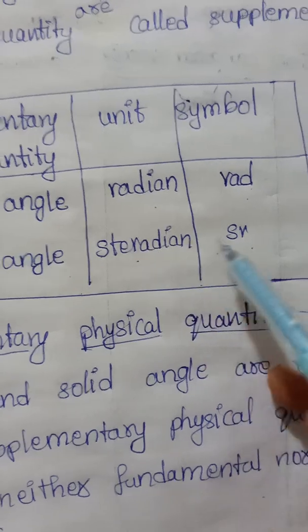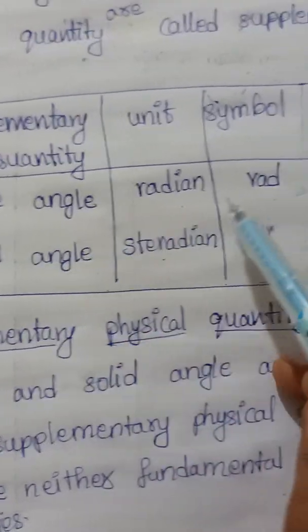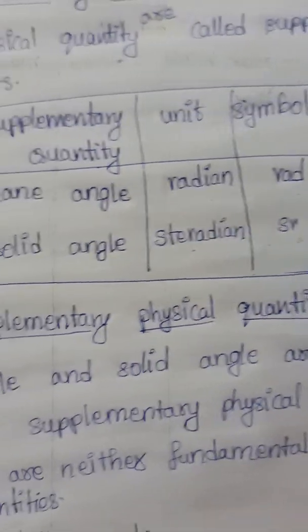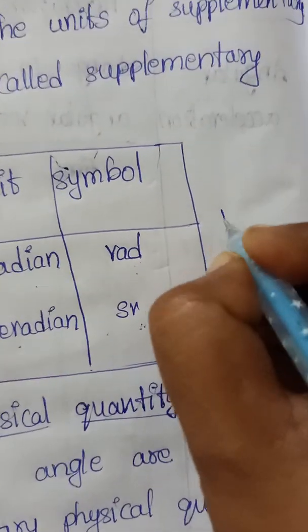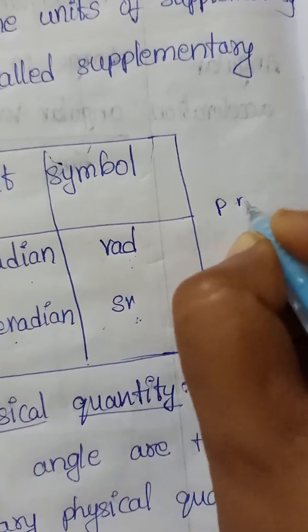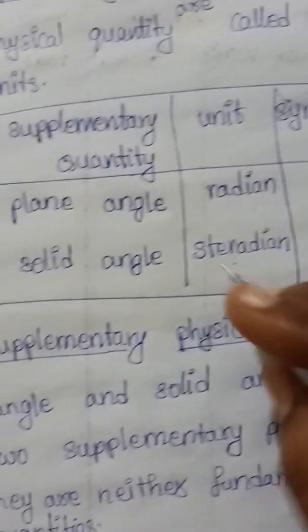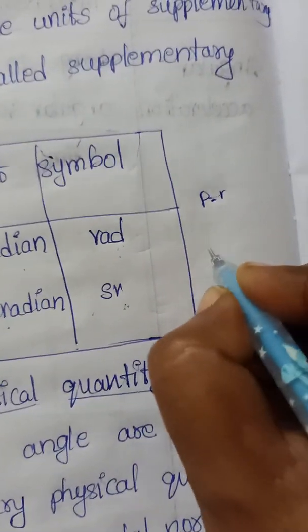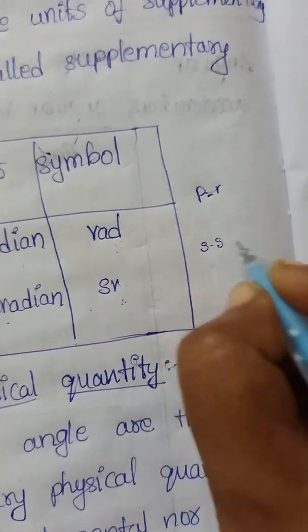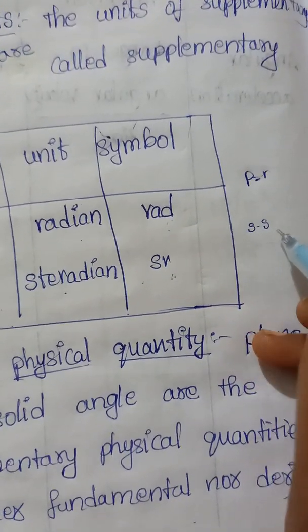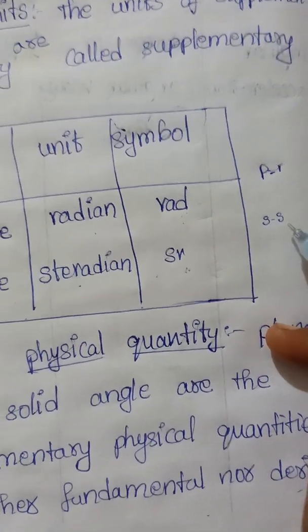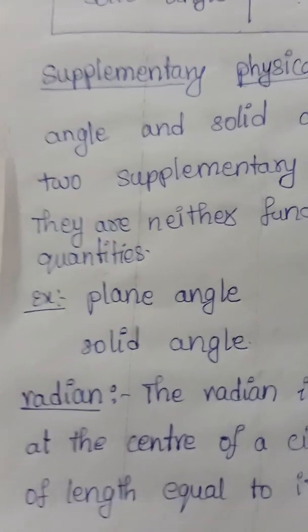You can remember this easily: plane angle — radian, like PR. And solid angle — steradian, like SS. Plane angle radian, solid angle steradian — remember it this way.